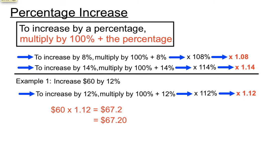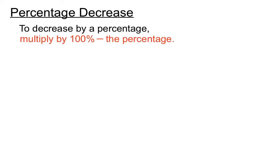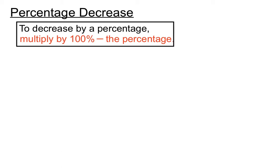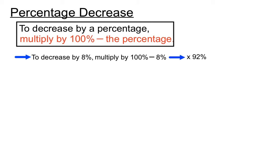Similar thing when we look at percentage decrease. To decrease by a certain percentage, we multiply by 100% minus the percentage. This time we're making the number smaller, so it's no surprise there's a subtraction involved. To decrease by 8%, we multiply by 100% minus 8%, which is 92%. The decimal version of 92% is 0.92, so we multiply whatever number we want to decrease by 0.92.